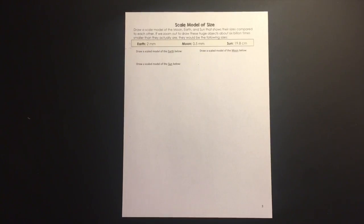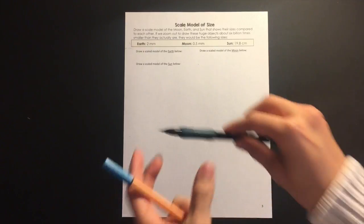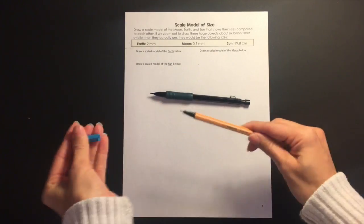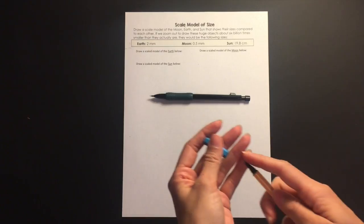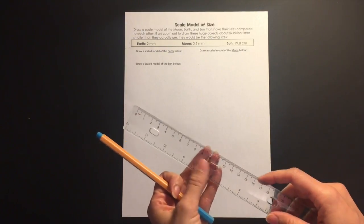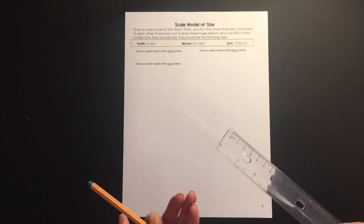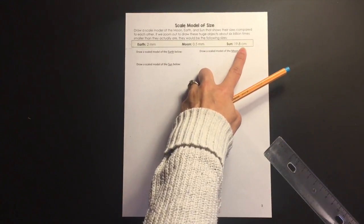On page three, students are going to draw a scale model of the Moon, Earth, and Sun that shows their sizes compared to each other. We're going to be drawing this about six billion times smaller than they actually are. A couple of materials are helpful: the first is some sort of writing utensil with a very fine point, like pens or a mechanical pencil. Students can also just use a very sharp pencil. Students will also need a ruler. When giving these directions, it's helpful to give some hints to the kids as they're drawing, because it is really hard to draw some of the smaller ones and to draw a circle that's a specific size in diameter.